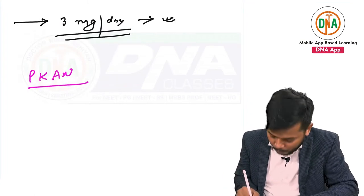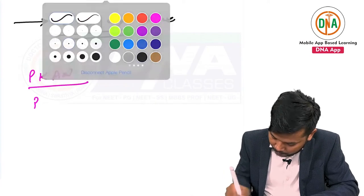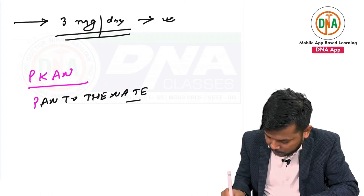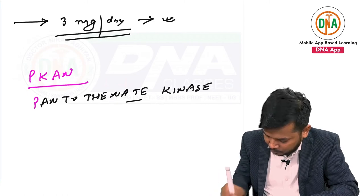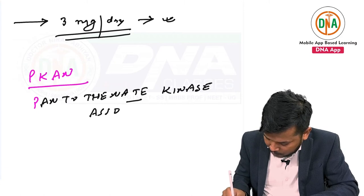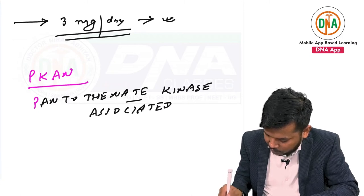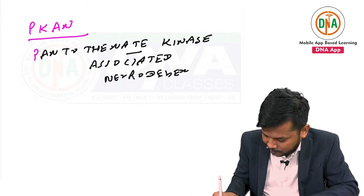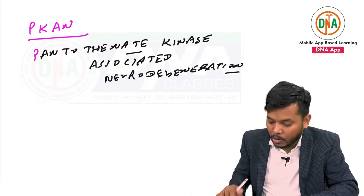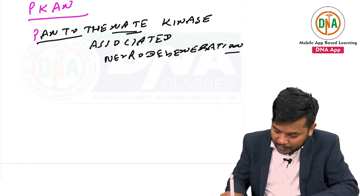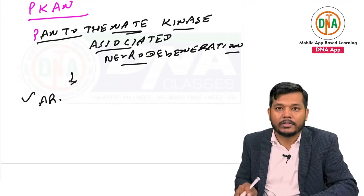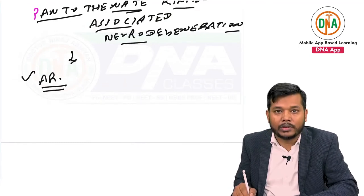PKAN stands for Pantothenate Kinase Associated Neurodegeneration. This is basically an autosomal recessive condition. You may get this type of question in exams.